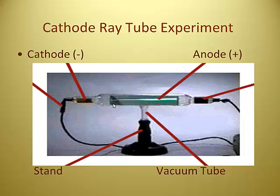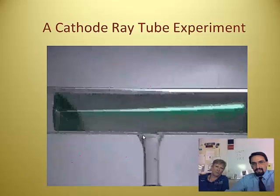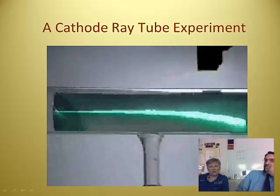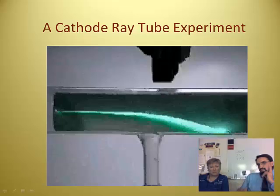It's a vacuum — empty on the inside, absolutely nothing. It's called a cathode ray tube because one end is the cathode, where they hook up the negative end of the battery, and the other end is the anode, where they hook up the positive end. The inside is a vacuum tube with a wooden stand so you don't electrocute yourself. But if it's a vacuum, why do you see something? There is something in there.